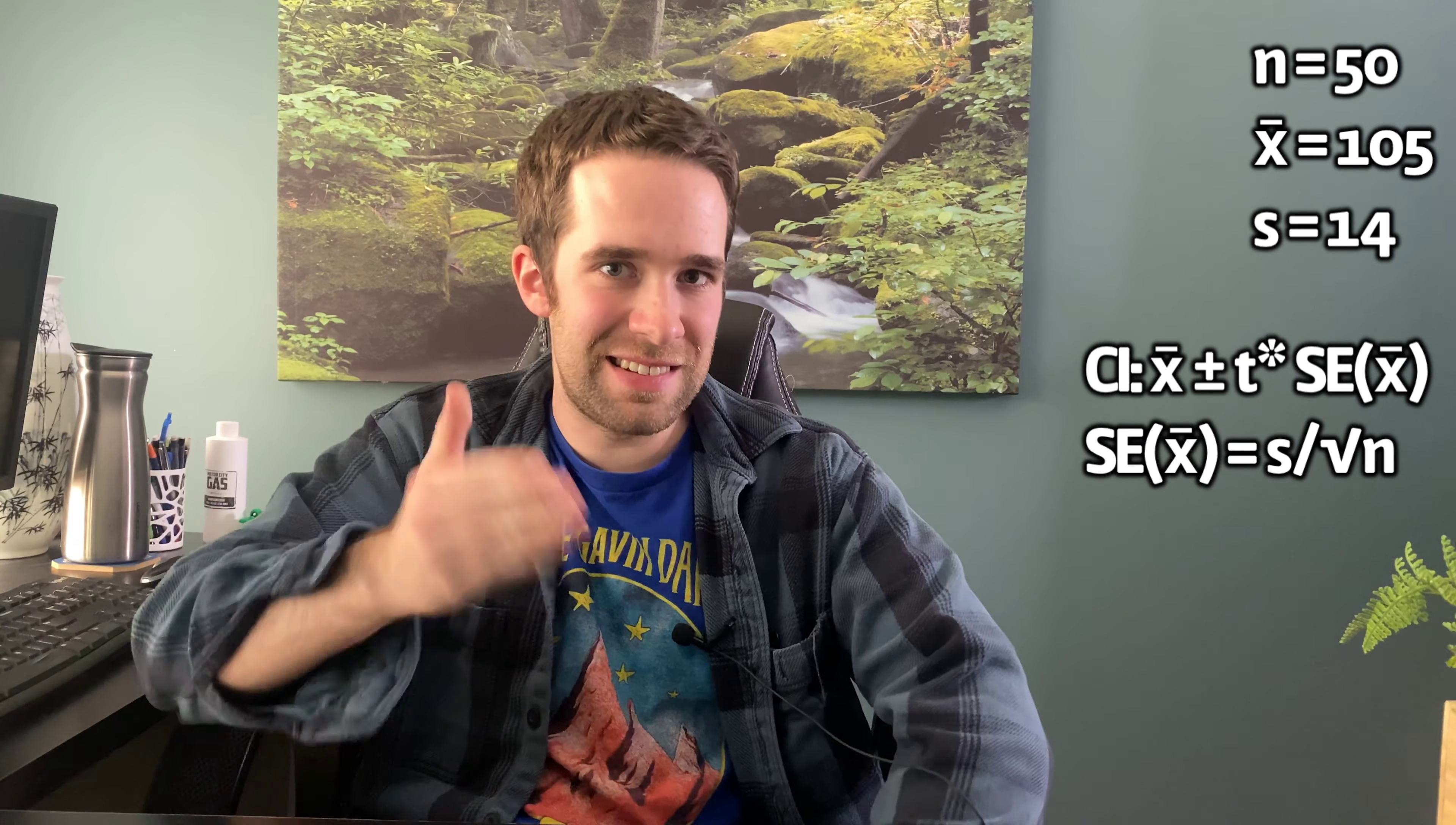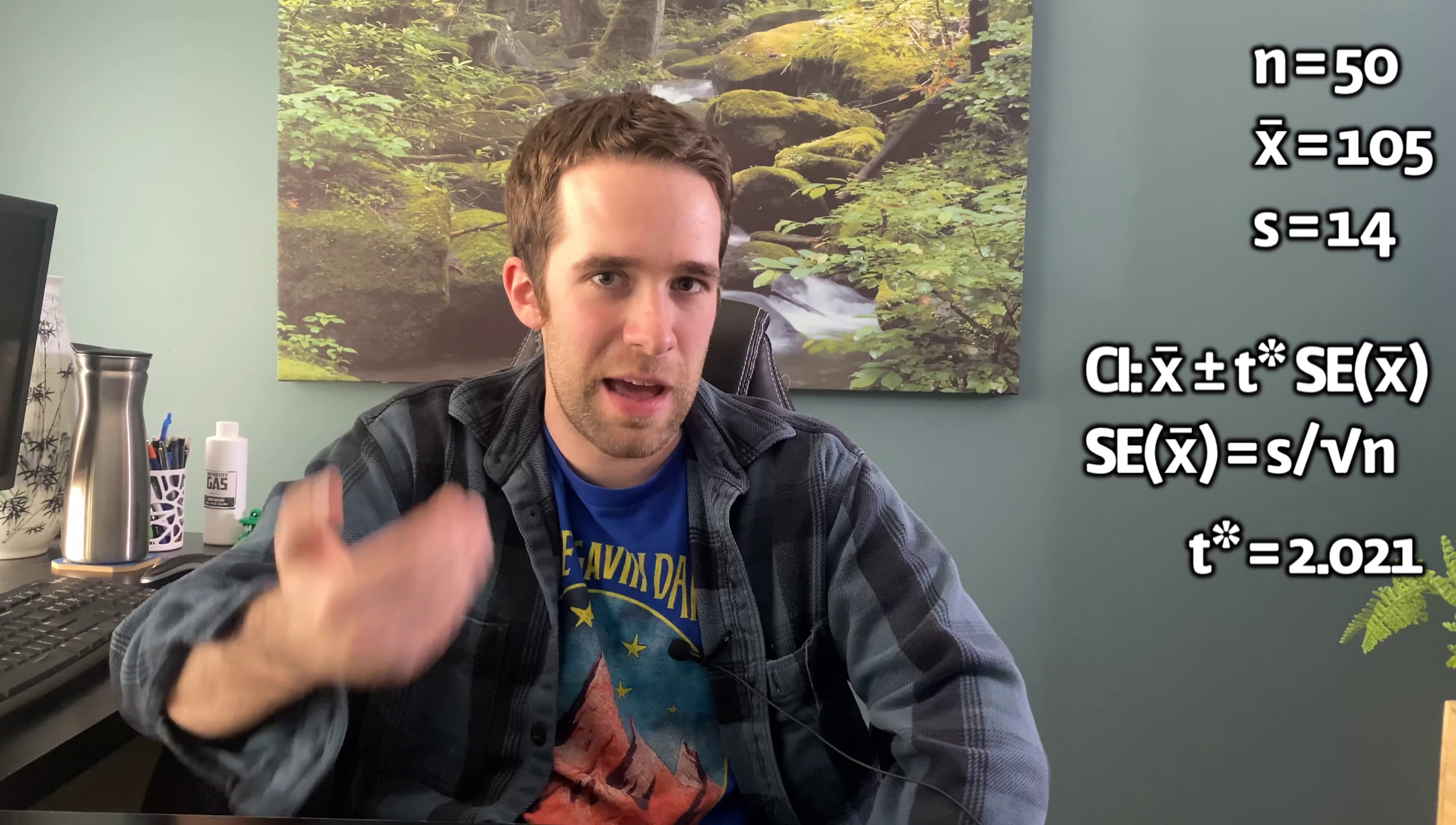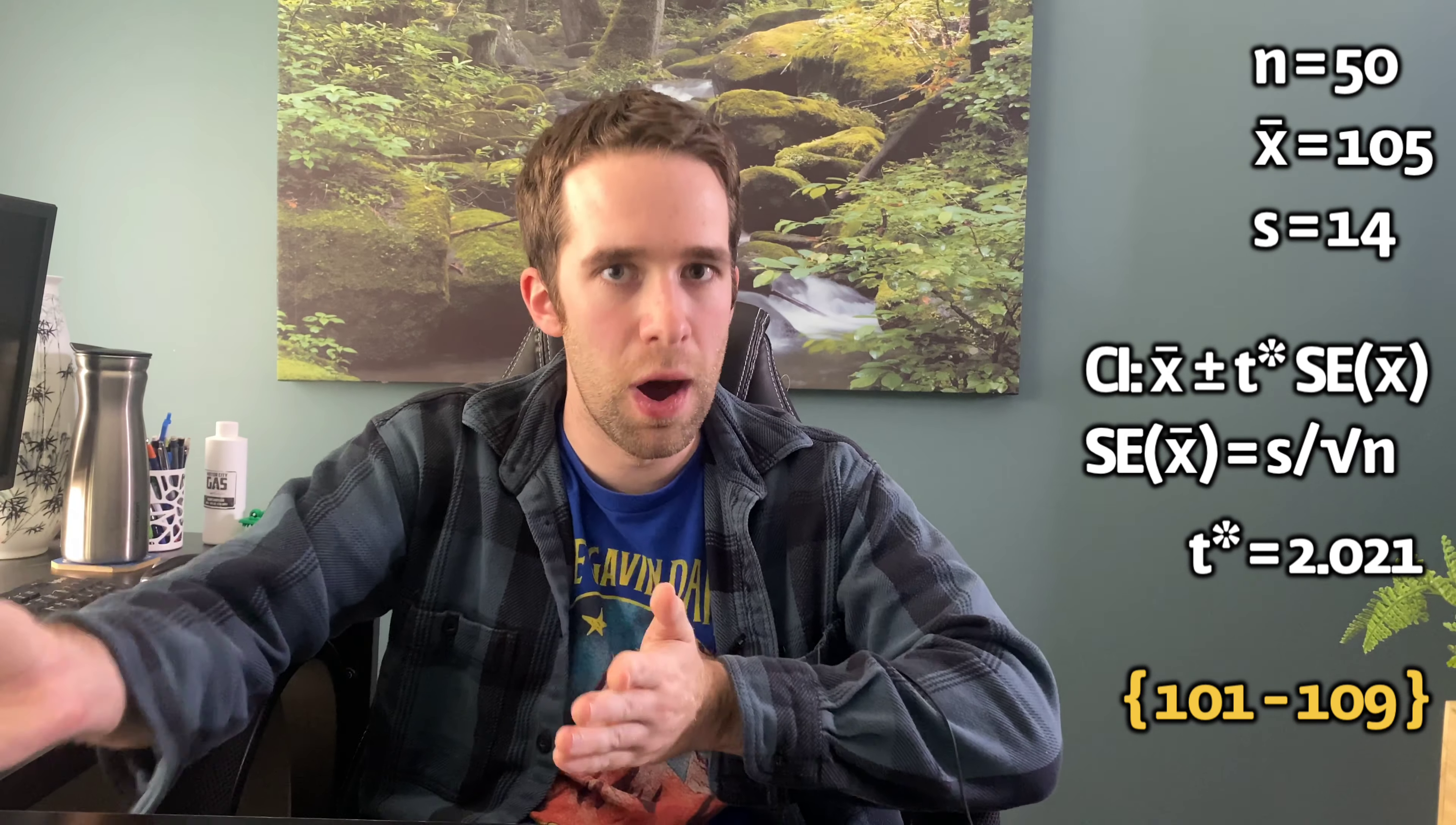The formula for that is X bar plus or minus T star times the standard error of X bar. Just like before, T star can be looked up using R or from using a table that's freely available on the web. And the standard error of X bar equals S divided by the square root of N, where S is the sample standard deviation. Do the math here, and we're going to get almost exactly to a confidence interval of 101 to 109.